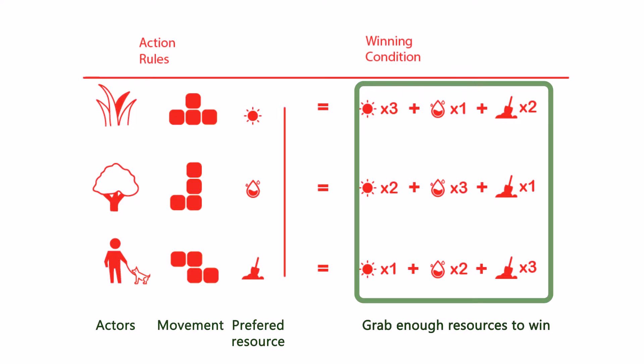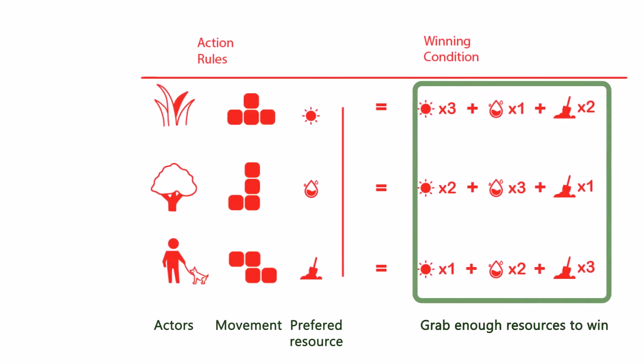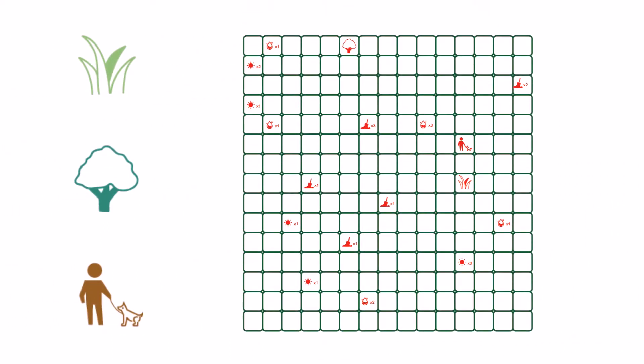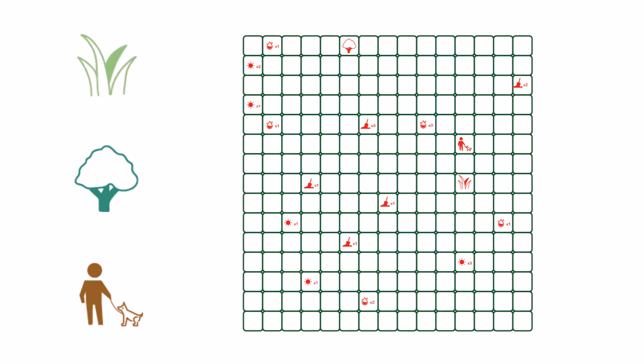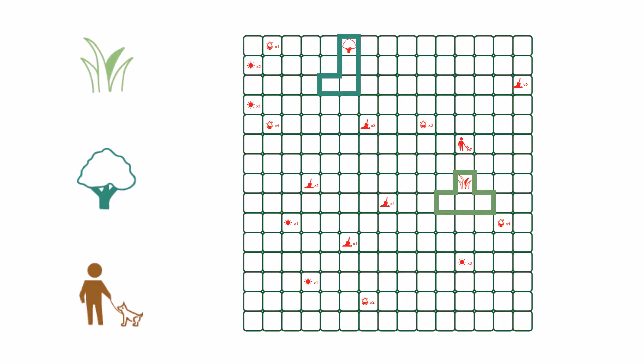The goal of the game is to collect enough resources in order to grow your plant and win the game. And each character has a preferred resource as illustrated on the board.